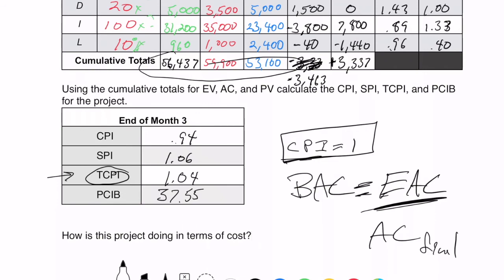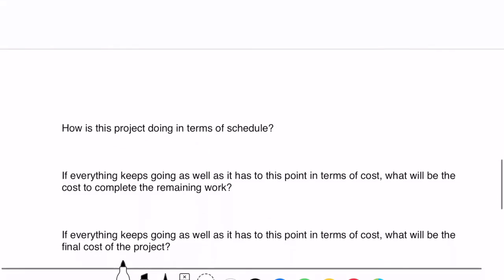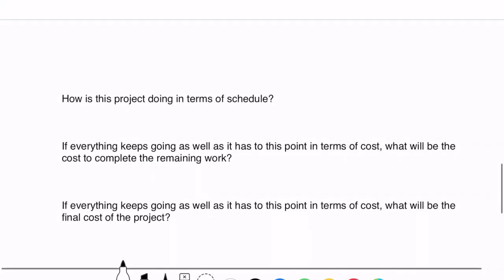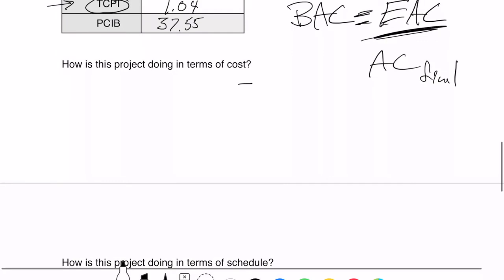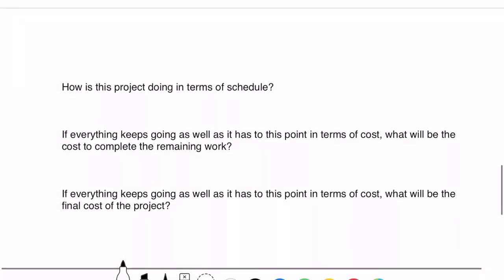Alright. So how is this project doing in terms of costs? Well, not as good as we'd like. How is this project doing in terms of schedule? Well, a little bit better than we might like. What would be the cost to complete the remaining work? So in this case, what we would do is we look at the BAC minus the earned value and we divide that by our CPI. And that would give us the cost to complete the remaining amount of work. That's also known as ETC.